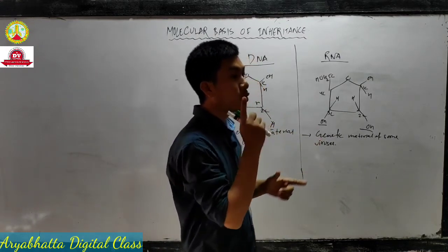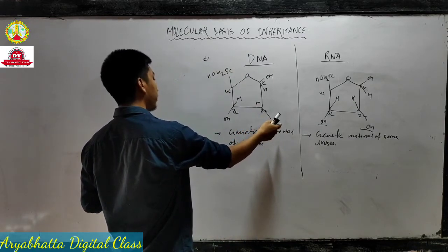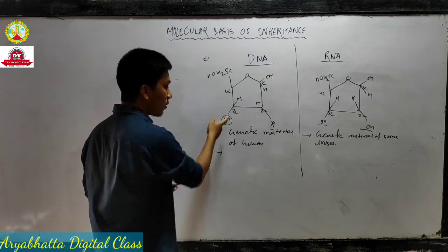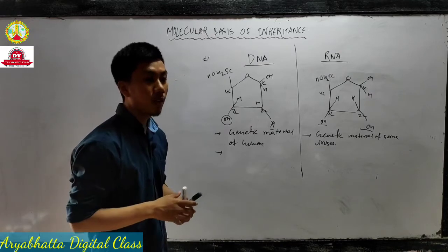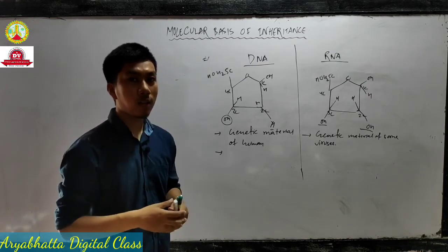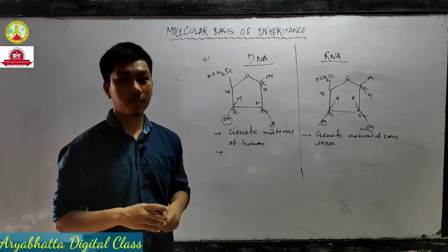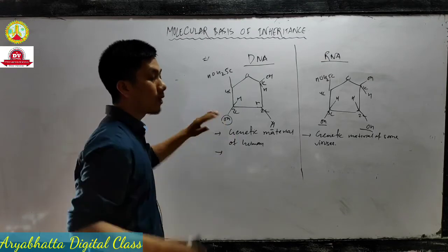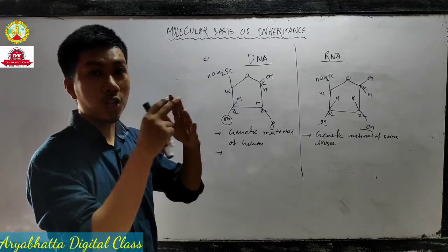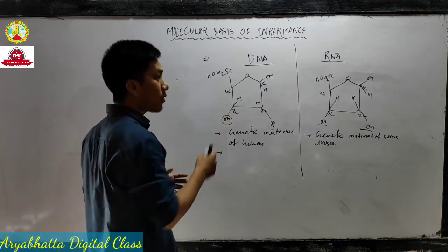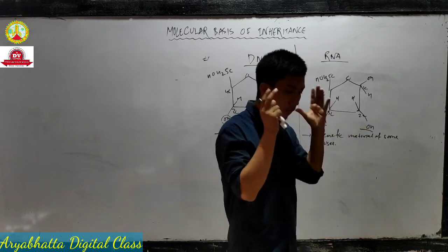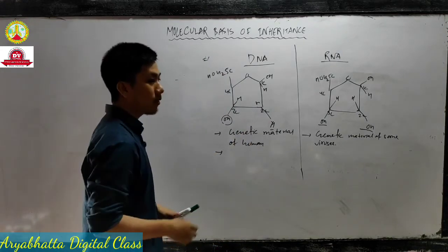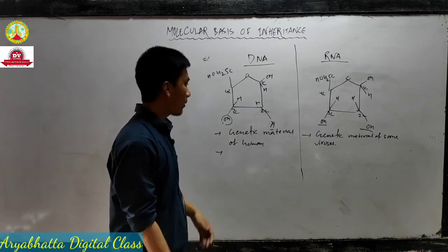At the 2' carbon number in DNA there is only one H - that means DNA has fewer free functional groups. Less functional groups means less reactive; less reactive means more stable. So: less functional group → less reactive → more stable. That is why DNA is our genetic material - because genetic material must show physical and chemical stability.